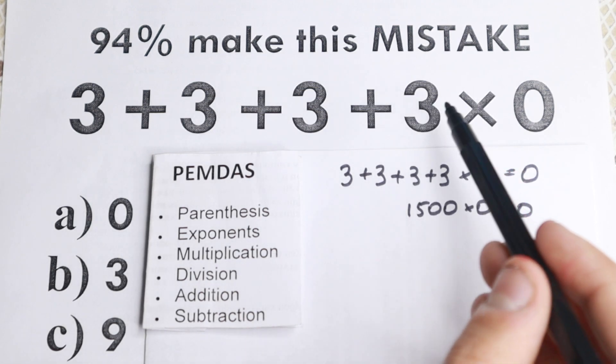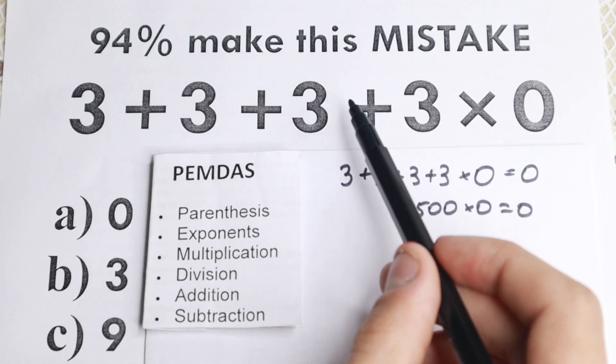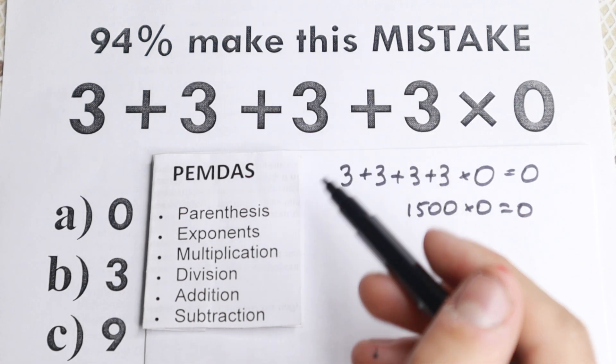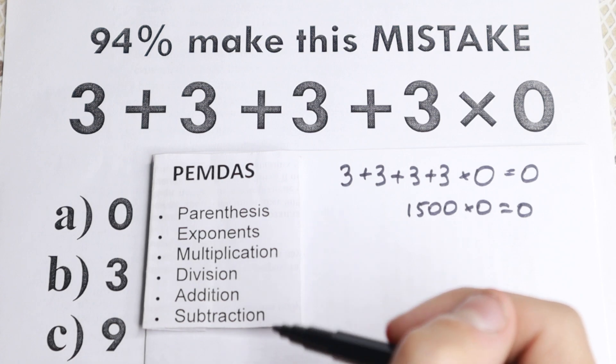So do we have an exponent right here? So I don't see any squares, any cubes right here, any fourth power, which is really great. So we just skip these two parts. And then multiplication division part.